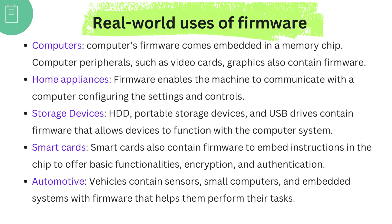Here are some real-world examples of firmware. In computers, firmware comes embedded in a small memory chip. Computer peripherals such as video cards and graphics cards also contain firmware. Home appliances such as washing machines and dishwashers utilize firmware — it enables the machine to communicate with the computer, configuring the settings and controls of the appliances.